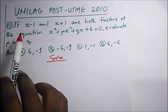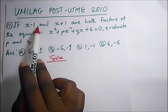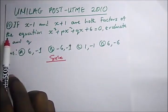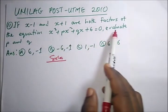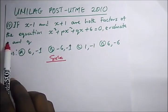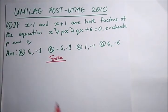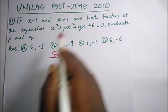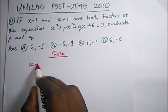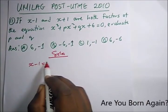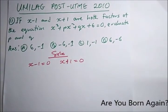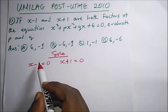Question 11 says: if x minus one and x plus one are both factors of the equation, evaluate P and Q. Since both are factors, we set x minus one equal to zero and x plus one equal to zero. The Unilag Post UME syllabus is majorly JAMB, so just make sure you revise your JAMB syllabus in maths.